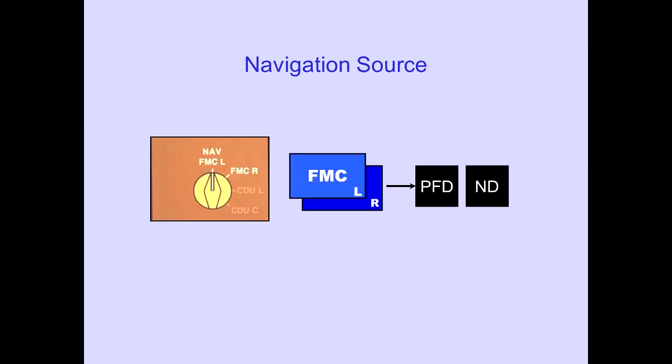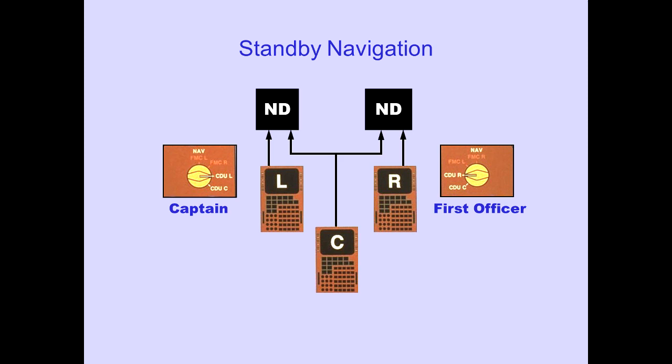The Navigation Source selector is used to select the Flight Management Computer source for navigation information. The left or right FMC can be selected. The CDU positions of the navigation source selectors are used to select the FMS CDU for standby navigation. The Captain can select the left or center CDU, and the First Officer can select the right or center CDU. Standby navigation is covered in the Standby Navigation module.